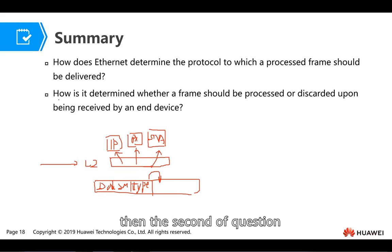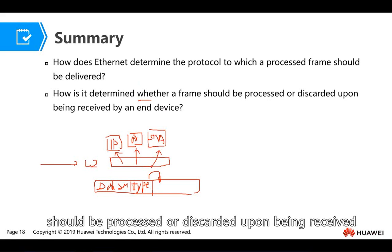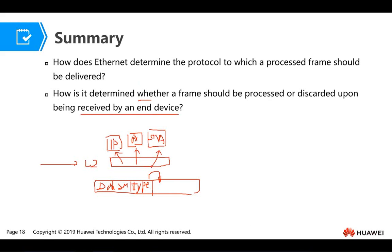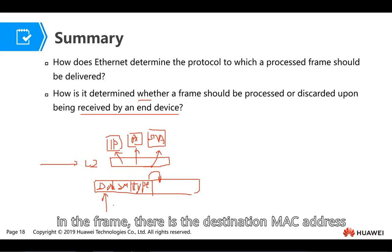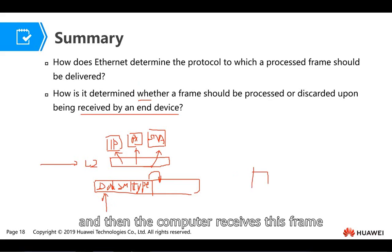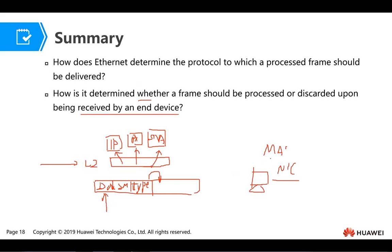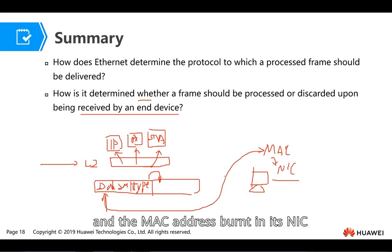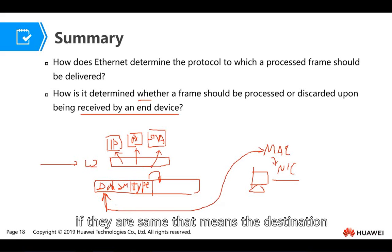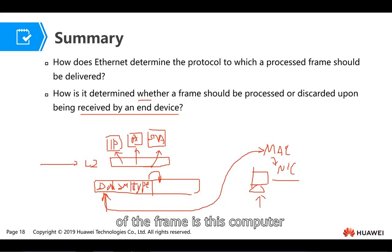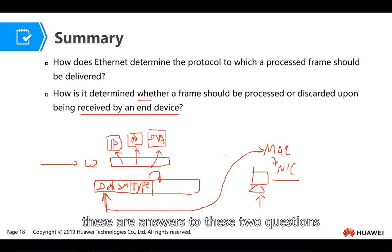The second question: how is it determined whether a frame should be processed or discarded upon being received by the end device? The answer is the destination MAC address. The computer's NIC has a built-in MAC address. We compare the destination MAC address in the frame with the NIC's built-in MAC address. If they are the same, the frame is accepted; if not, the frame is dropped.